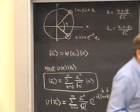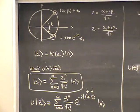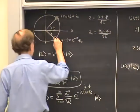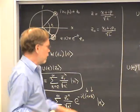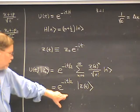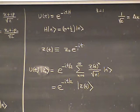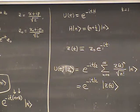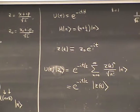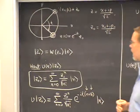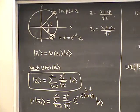The fact that the expectation values follow the classical motion is a consequence of the Ehrenfest relations and the fact that the Hamiltonian is quadratic, so we kind of knew that already. But this gives us further information: it tells us that the state remains a coherent state, and moreover there's an overall phase factor e to the minus it over 2. This is an explicit demonstration of how the wave packet follows the classical motion and remains a minimum uncertainty wave packet in the course of time.